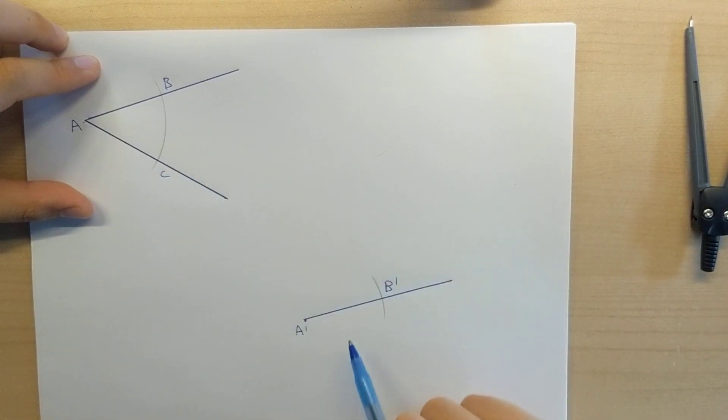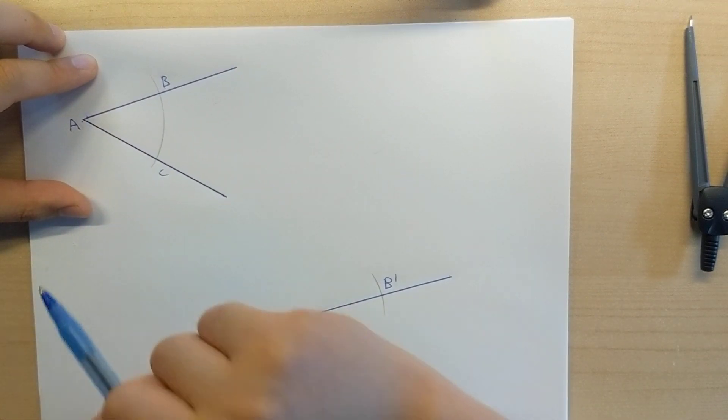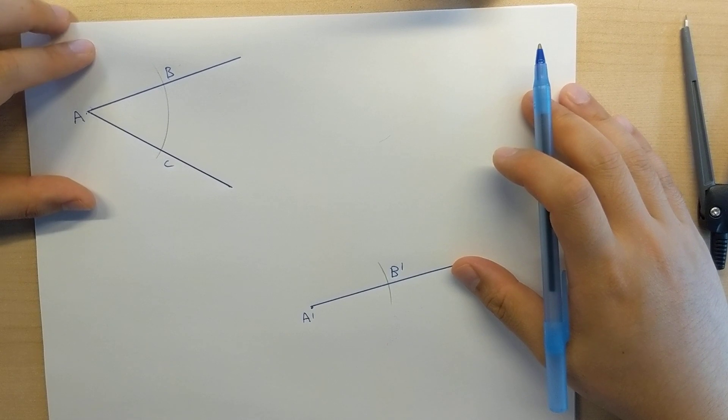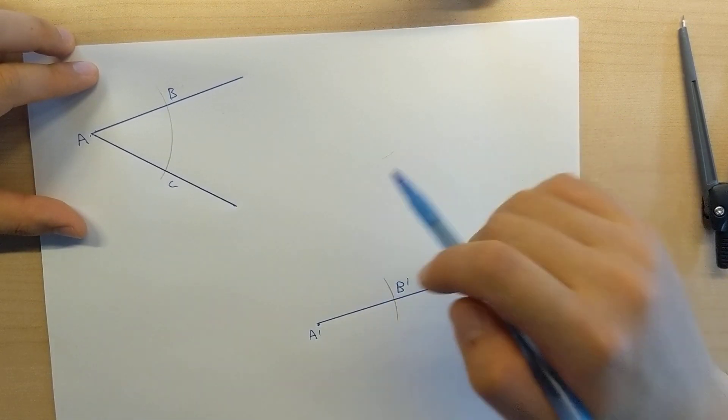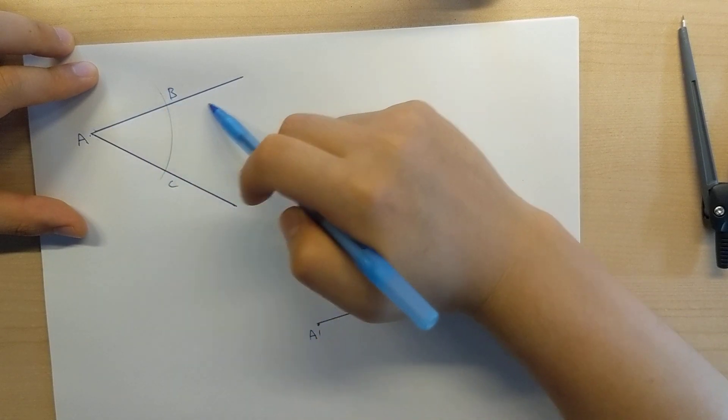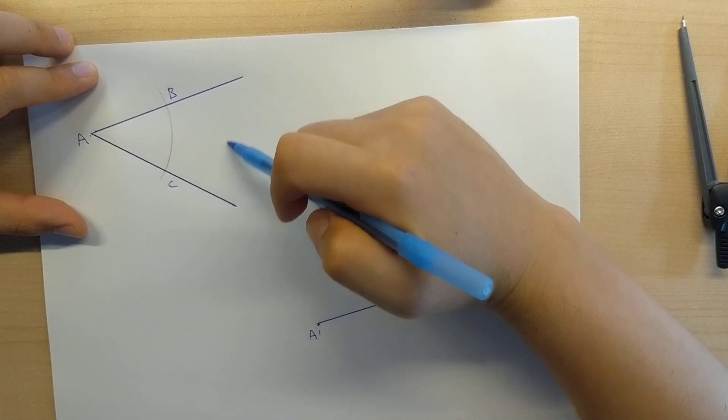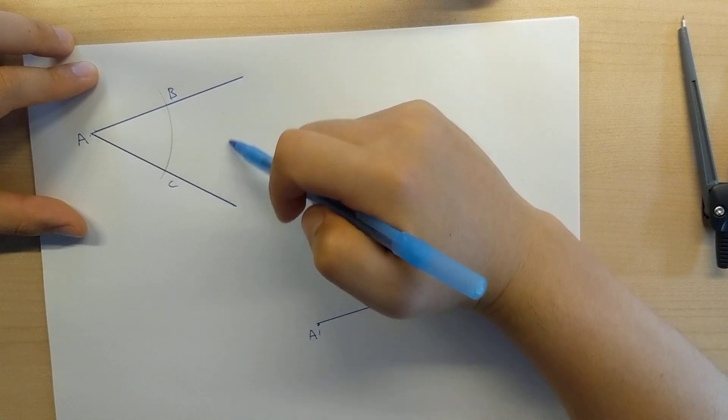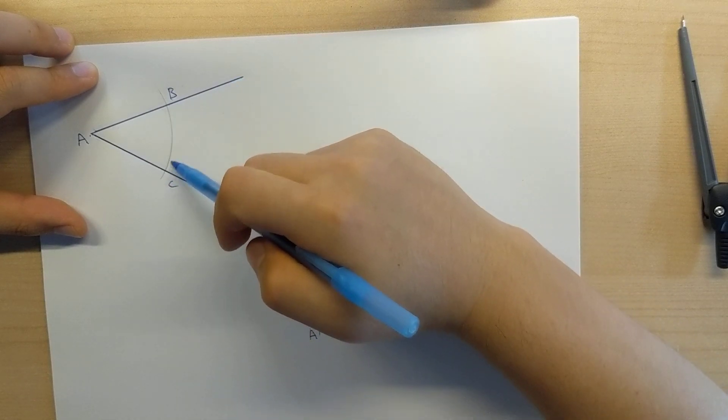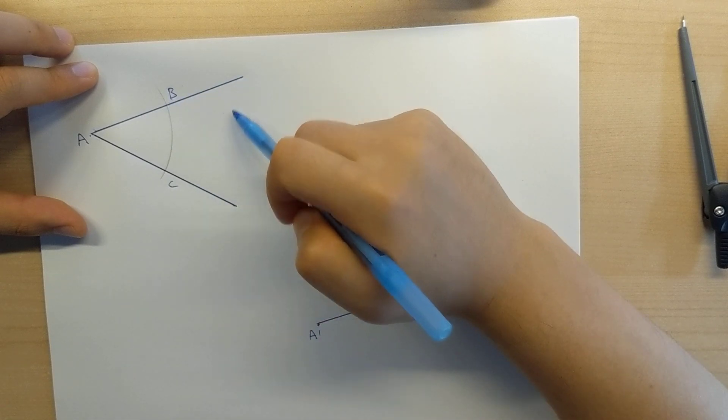So now I have the length of A prime B prime, which is the same length as A to B. What I'm going to do now is I am going to figure out how wide to open this. Now, understand this, if B happened to be somewhere further down, the opening is going to be much larger.